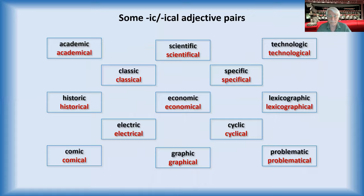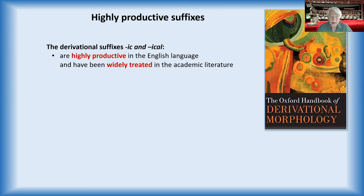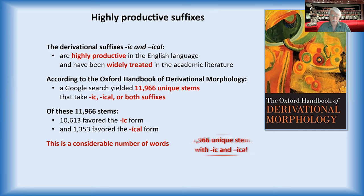The suffixes -ic and -ical are very productive in the English language, so they have been widely treated in the literature. For example, in this handbook from Oxford, there was a Google search reported that yielded almost 12,000 unique stems that took either one or the other or both of them. And it's quite a big number that is relevant.